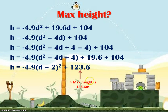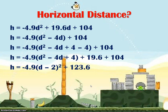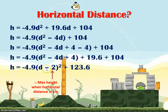So the K value is your maximum height — this bird is going to reach 123.6 meters. They also asked about the horizontal distance, and that happens when the D value is positive 2, the opposite sign of the value inside the bracket. So 2 meters from the slingshot is when it reaches this maximum height of 123.6 meters.